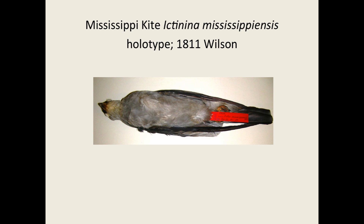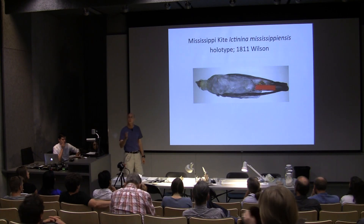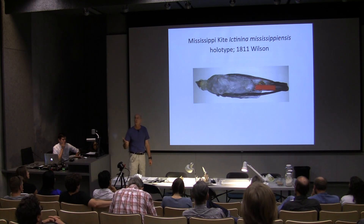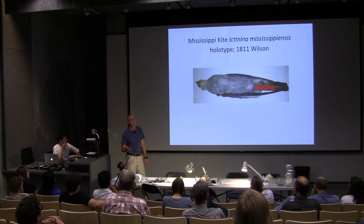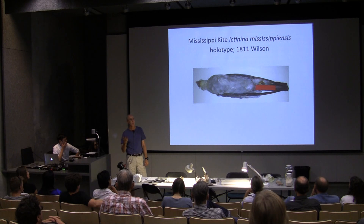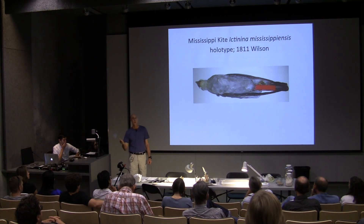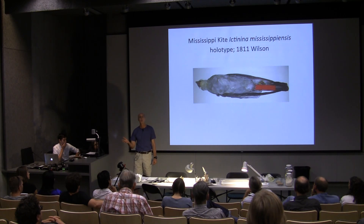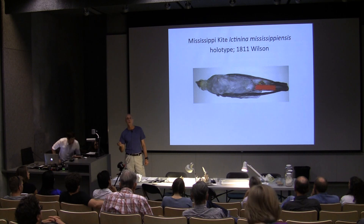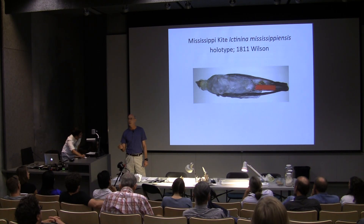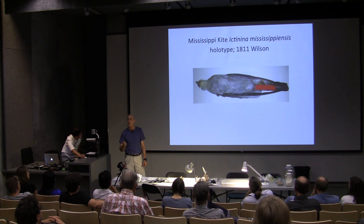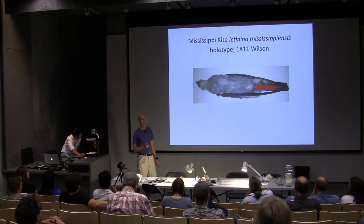Despite being described over 200 years ago, this specimen is still in good shape. We know from specimens of this age — some 250 to 300 years old — coupled with archaeological data where you have mummified things like falcons that are essentially study skins, some dating back over 2,000 years. From those lines of evidence, we're pretty confident that if we maintain these specimens in archival quality condition, they should last at a minimum a few thousand years.